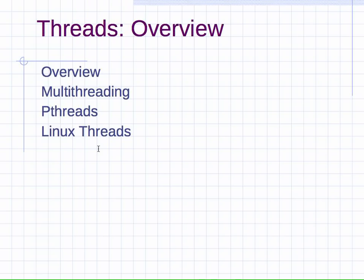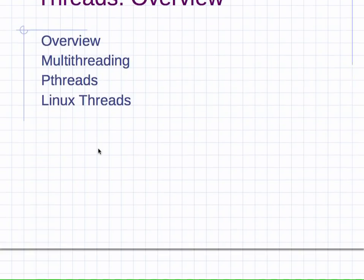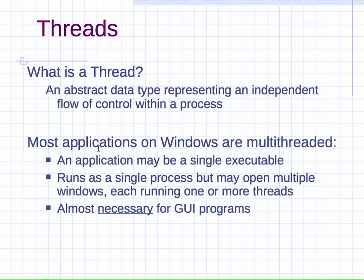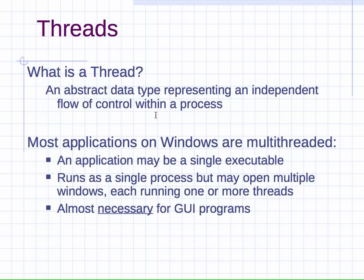So what exactly is a thread? A thread is an abstract data type representing an independent flow of control within a process. The idea is that a process is the operating system's view of a running program, and within that running program you can have independent flows — you can think of these as independent machines running within a single process. They're like separate programs, but they all share something with the main process.